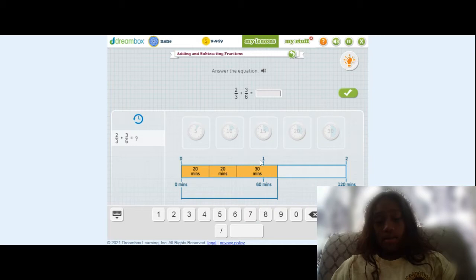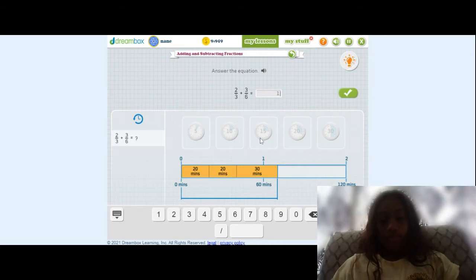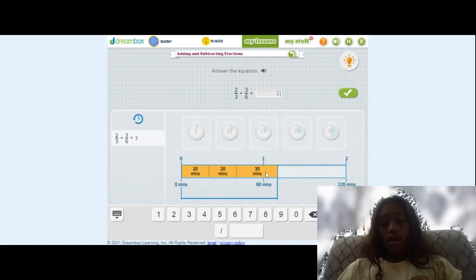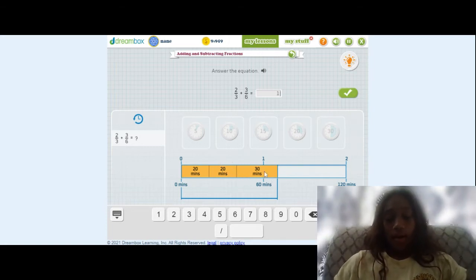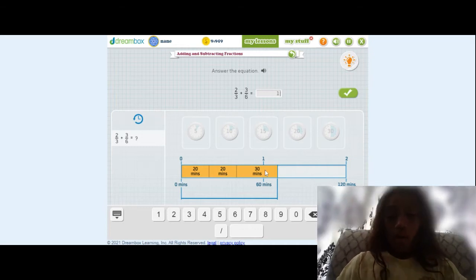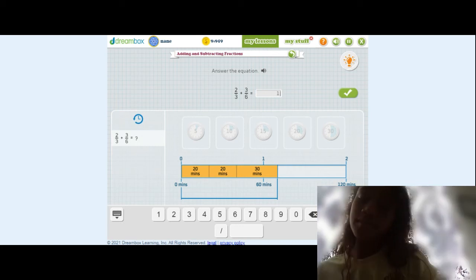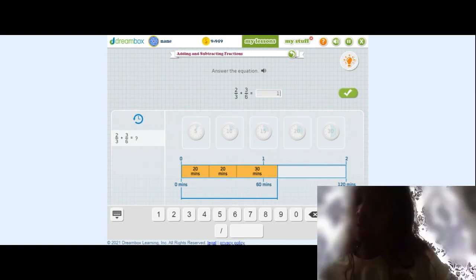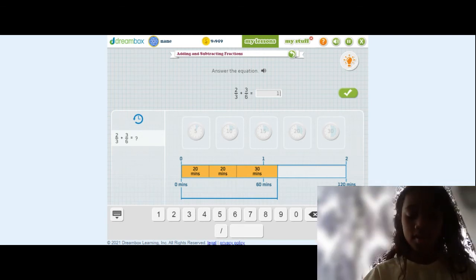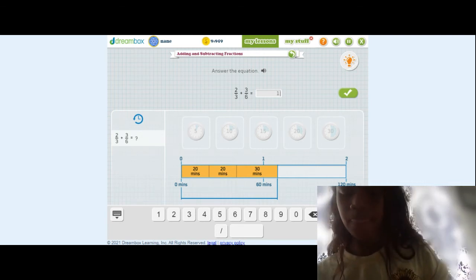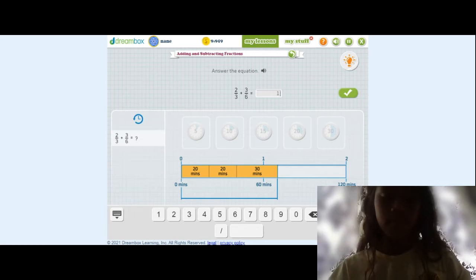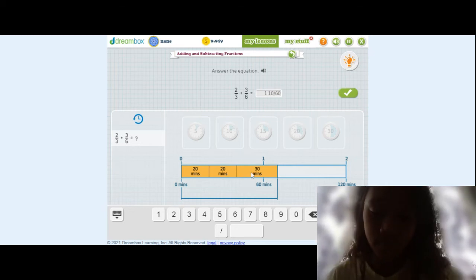So, if we look on this bar model that we did, we have this one, so that means one and also equals 60 minutes, so that means we passed that. So first we put one. We could try to figure out how much this would equal, or we could just add them up, like 30 plus 20 plus 20 or 30 plus 40. And that would equal 70. So we could do 1 and 10 over 60.